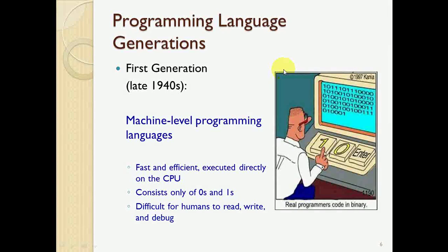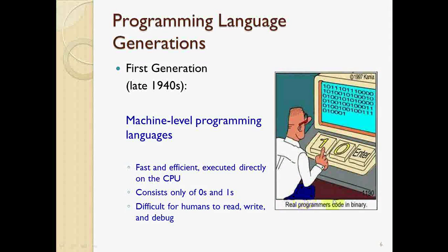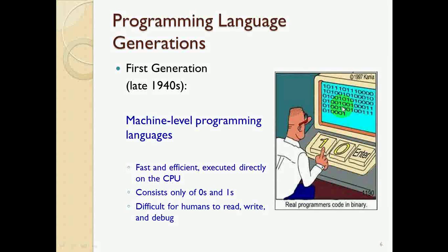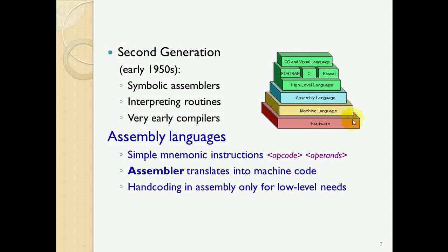Programming languages can be divided into generations: first, second, third generation, and so on. The first generation is machine language, shown here as binary program code. It runs directly on the CPU, making it fast and efficient because it is very close to the hardware — consisting only of zeros and ones. The main disadvantage is that it is difficult for humans to read, write, and debug.